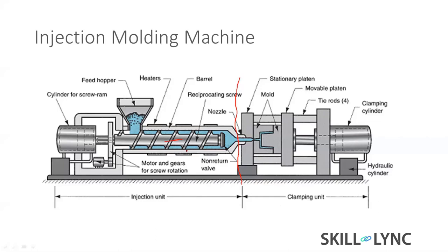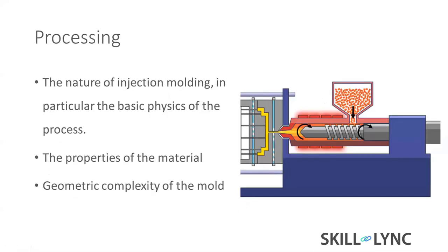Then the screw pushes the material forward while closing the mold. You can see in the center - this is the mold. So in processing, we have to control the injection unit, the clamping unit, and the cooling of the mold. This is the processing we are going to simulate in the Autodesk Moldflow simulation software.